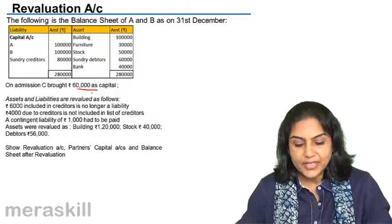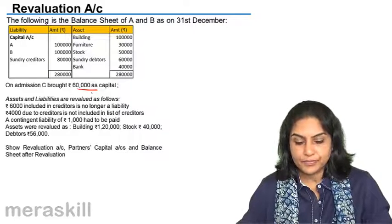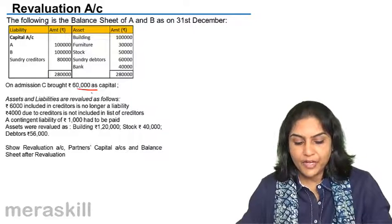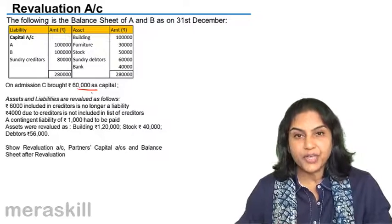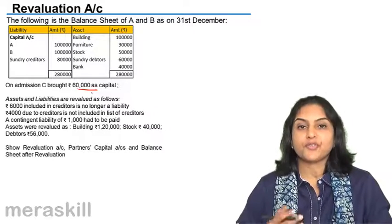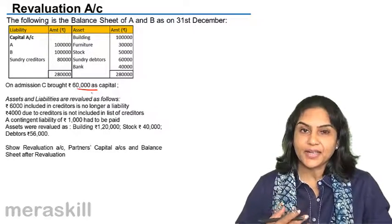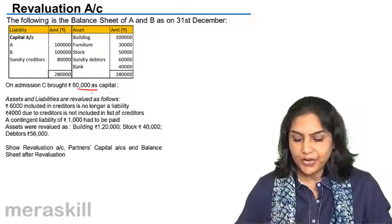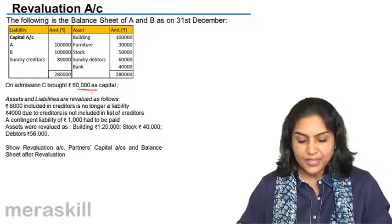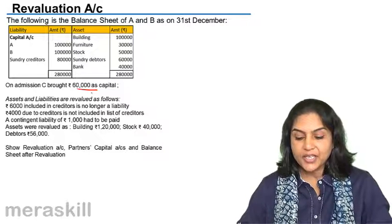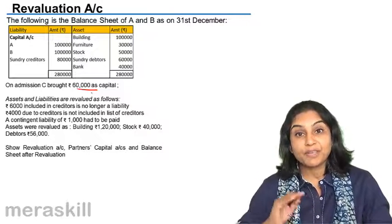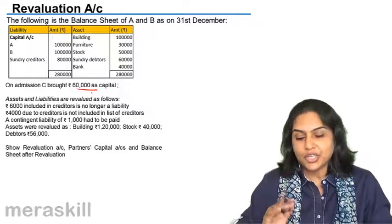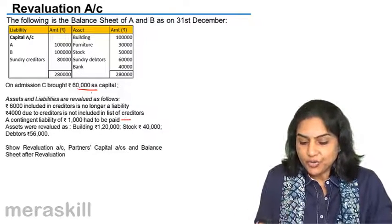We will say creditors account debit to revaluation. 4,000 due to creditors not included in the list of creditors — we have to bring it in. Revaluation account debit to creditors. Contingent liability had to be paid, so it becomes revaluation account debit to bank.